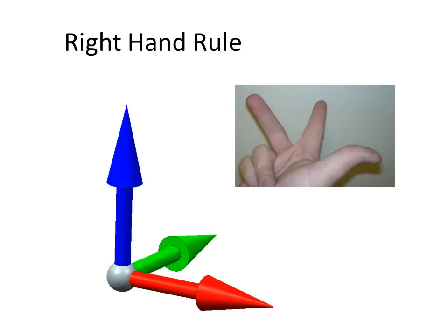These axes are arranged like your thumb, your index finger, and your middle finger of your right hand, so that if you point your thumb in the direction of one axis, the other two axes line up with those two fingers. This follows what's called the right hand rule.